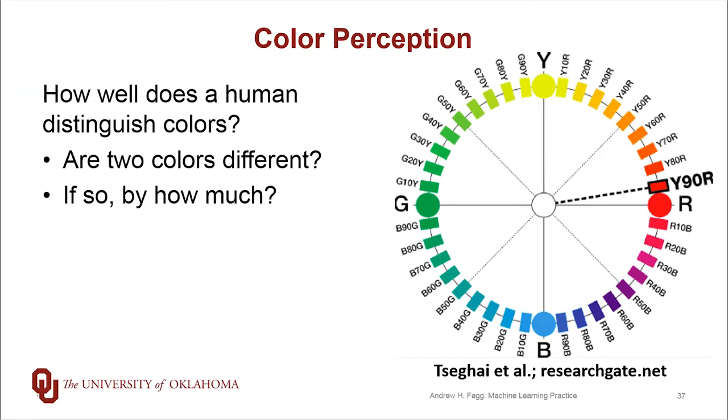Here's another scenario drawn from the human perceptual world, so this is color perception. The experiment is one where we present a human with pairs of colors and we ask whether or not these colors are different, and if so, by how much. And so if you look at, say, G20Y versus G10Y, I actually have a very hard time distinguishing between those two colors, but G10Y versus Y40R, that's a very large difference.